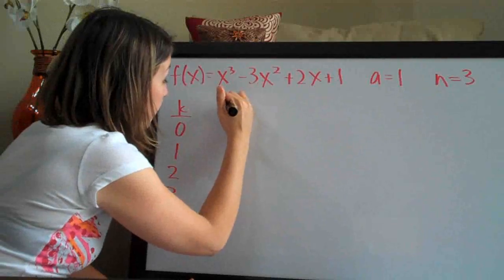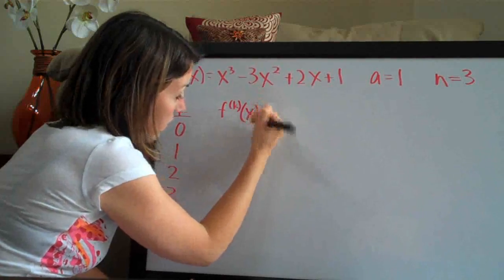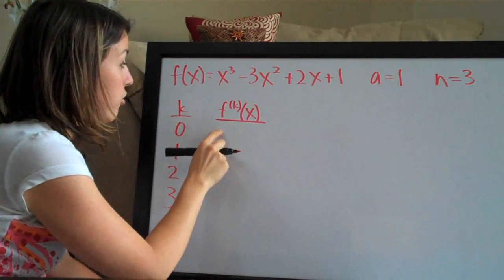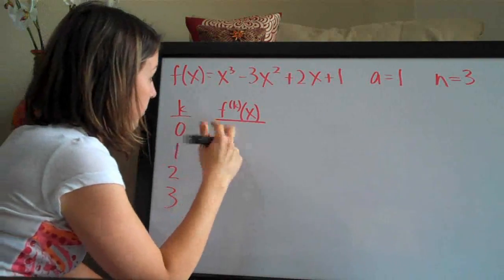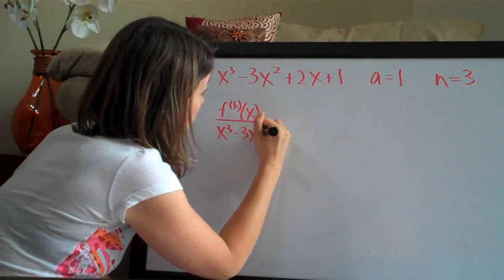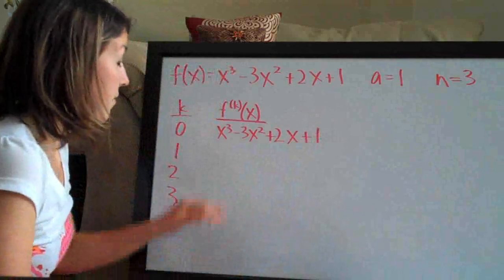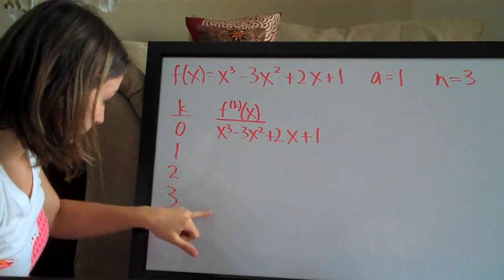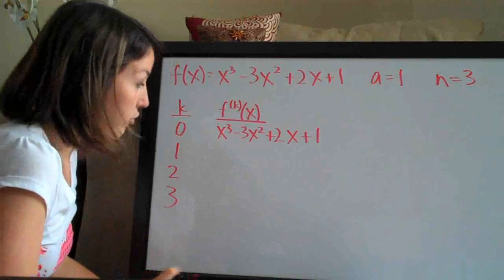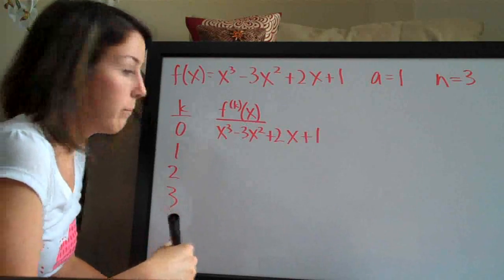Then we say f_k of x and we always write the original function first here. So x cubed minus 3x squared plus 2x plus 1. And then until we get down here to three, we go ahead and take the derivative. If you need help with derivatives, go visit the derivative section on my website.